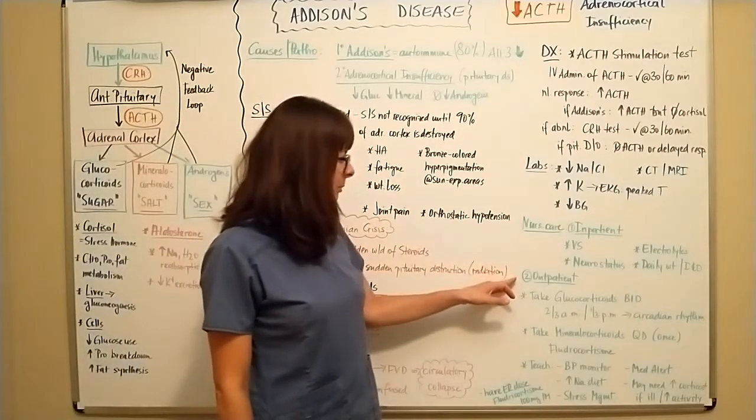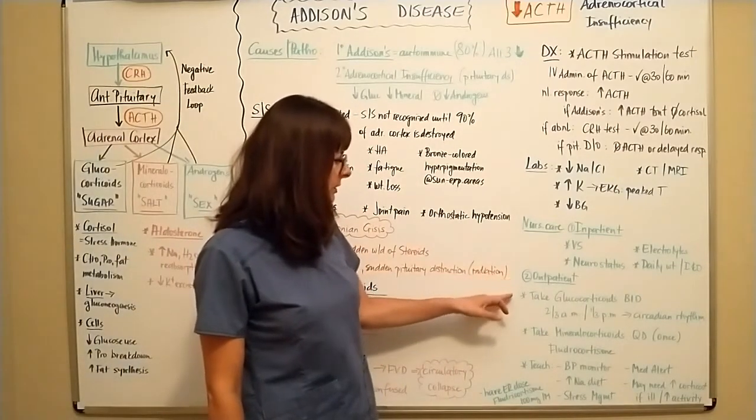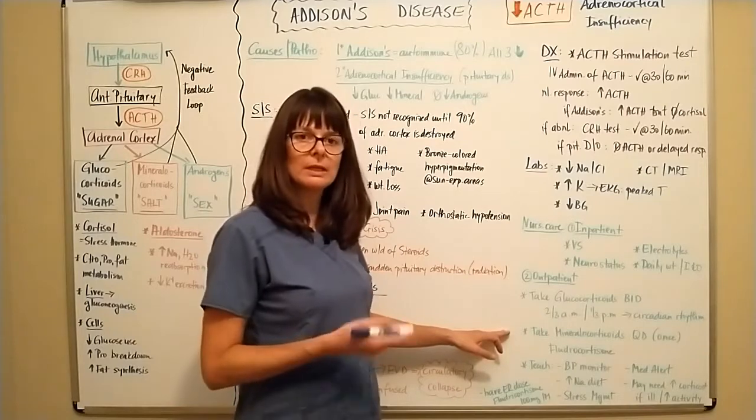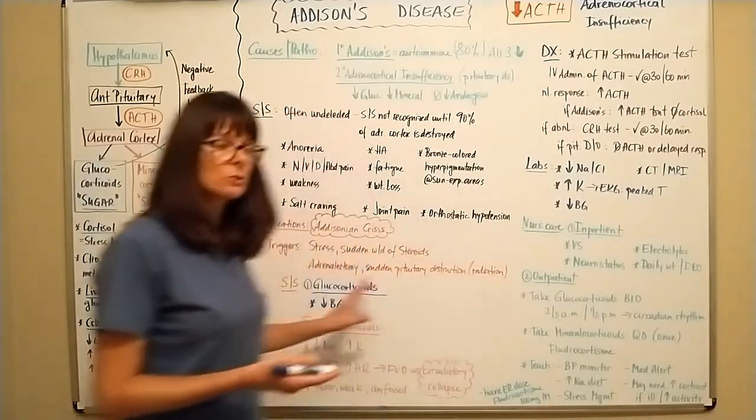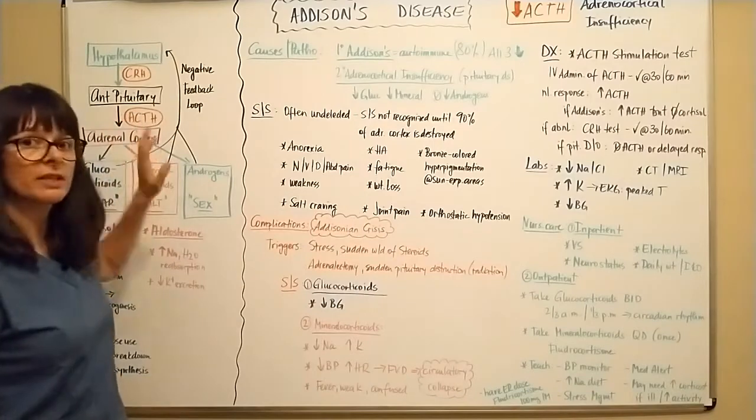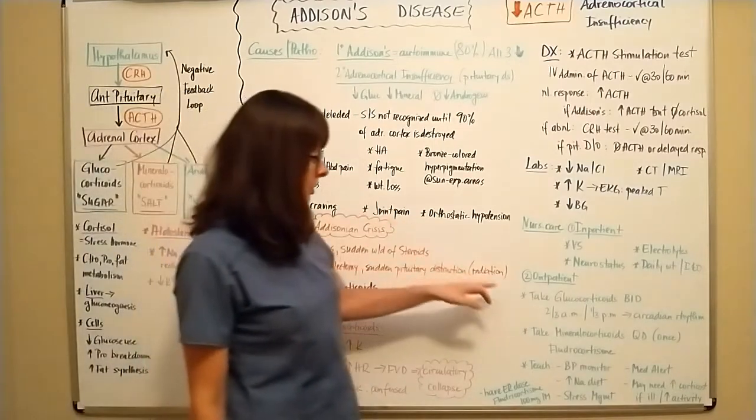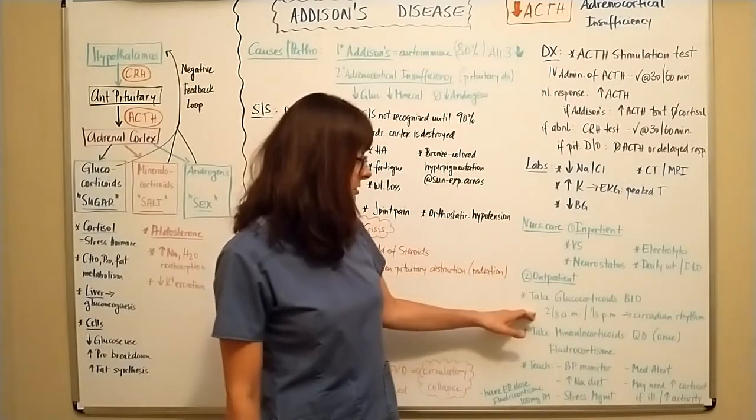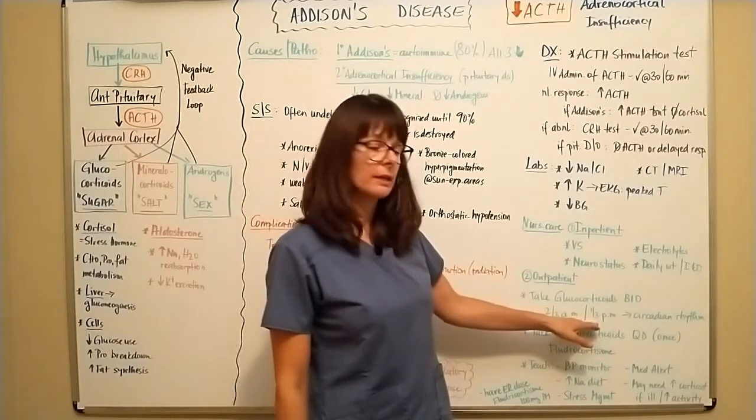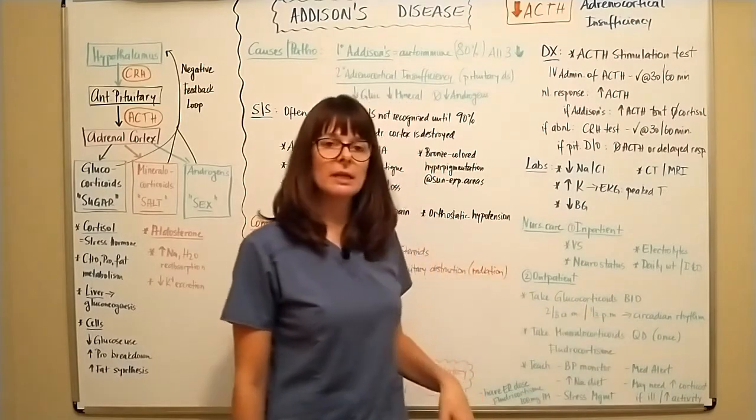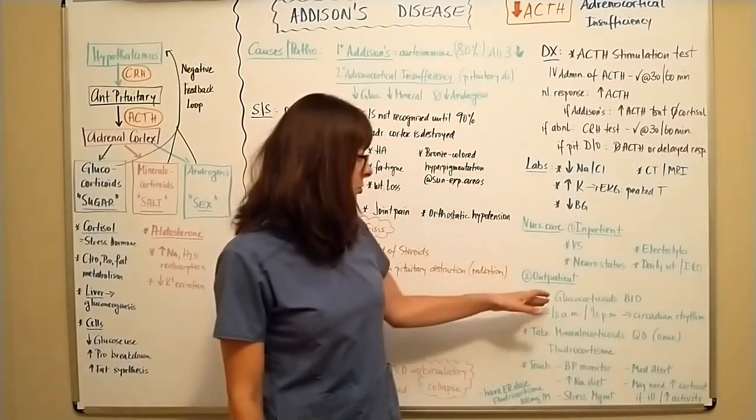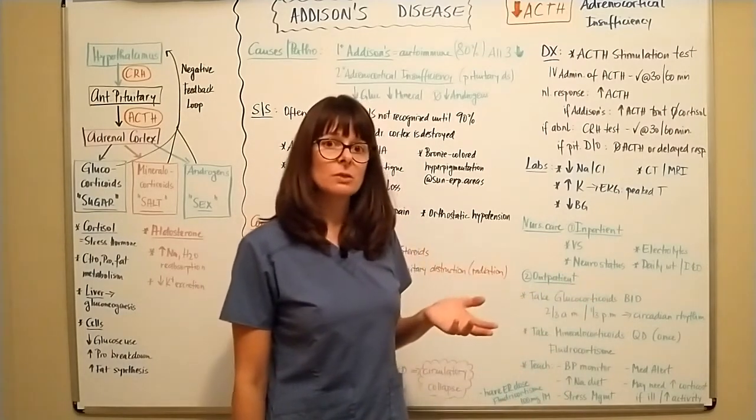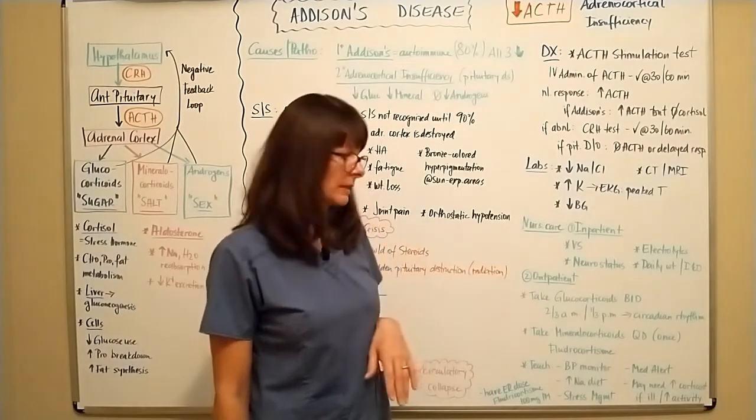If the patient is treated on an outpatient basis, they will need glucocorticoids and mineralocorticoids to be administered. They basically would need these hormones to be replaced because their adrenal cortex is not working. So glucocorticoids are recommended to be taken BID twice a day with two thirds of the dose in the morning and one third in the evening to mimic the circadian rhythm. If the glucocorticoids are taken at night only or more of a dose, it can lead to sleep disturbances because the circadian rhythm gets disturbed.